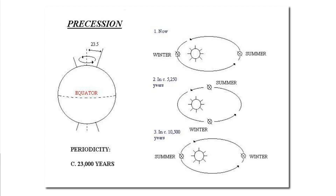Currently Earth is close to the Sun during the Northern Hemisphere winter. But in 10,000 years, Earth will be furthest from the Sun during the Northern Hemisphere winter. So right now, Earth has short, mild winters and long, mild summers. But in 10,000 years it will be the opposite — we'll have short, hot summers and long, cold winters.